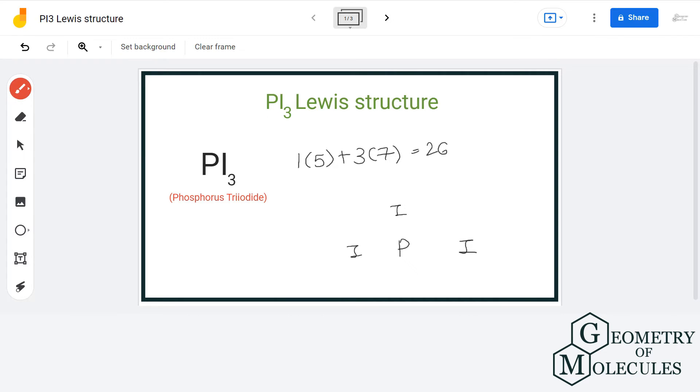For the arrangement of electrons, let us put a pair of electrons in between each atom for bond formation. This way, we have used a total of 6 electrons and we are left with 20 more.